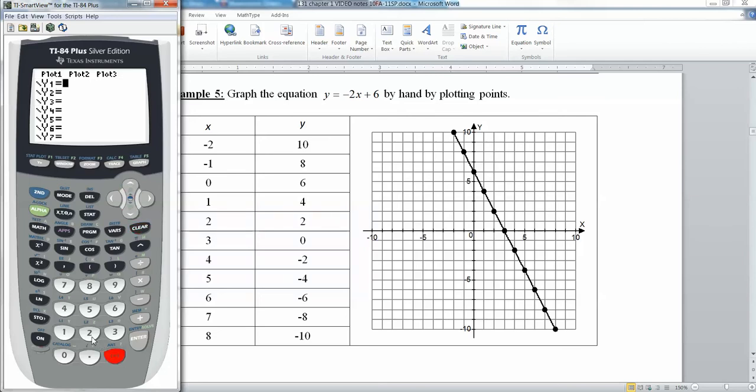And then you want to type negative 2. Now notice, it's the negative button down here in the corner, not the minus sign over here. But negative 2x, that's the xt button, plus 6. Enter. So there's your equation, negative 2x plus 6. Negative is this button down here.